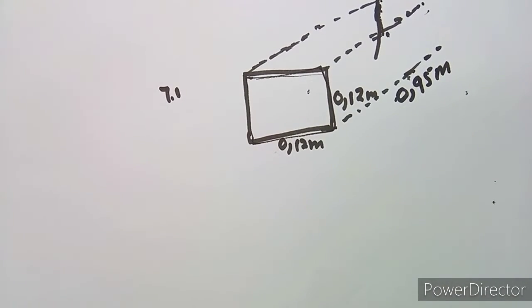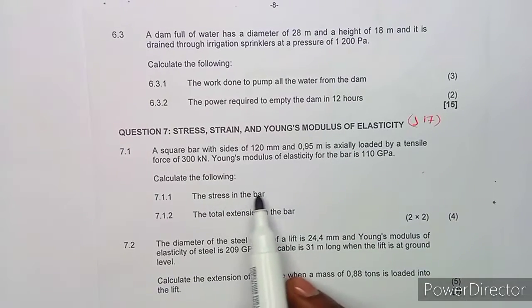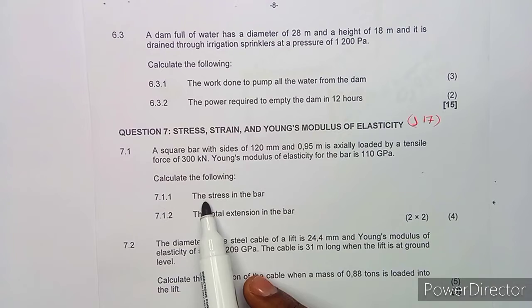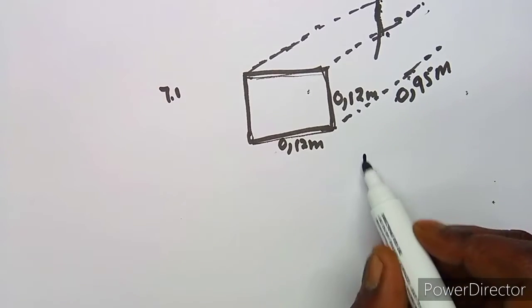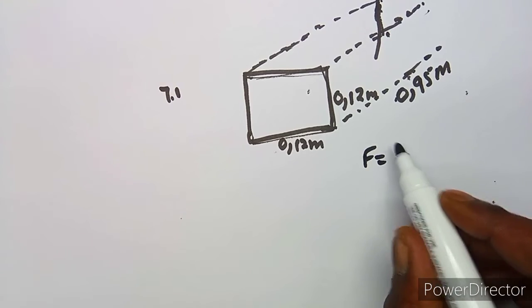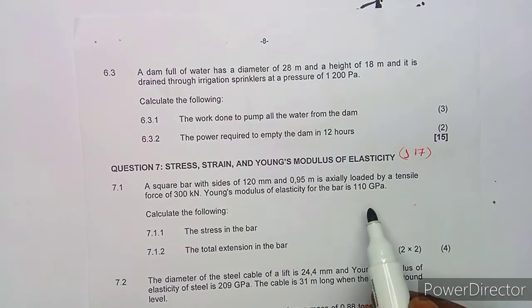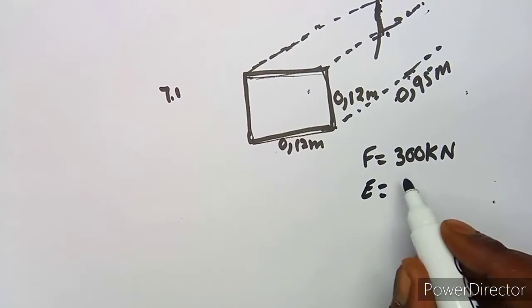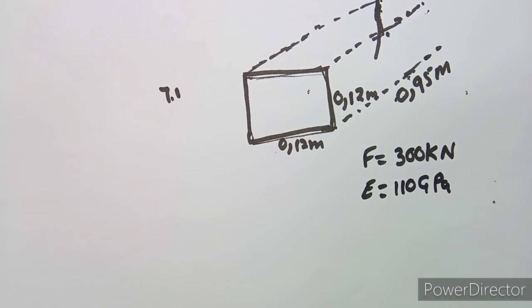The question asks us to calculate. We are given the force of 300 kilonewton — remember kilo means times 10 to the exponent of 3, or times 1000. We are also given the Young's modulus, which is E, as 110 gigapascal, and remember giga is to the exponent of 9.